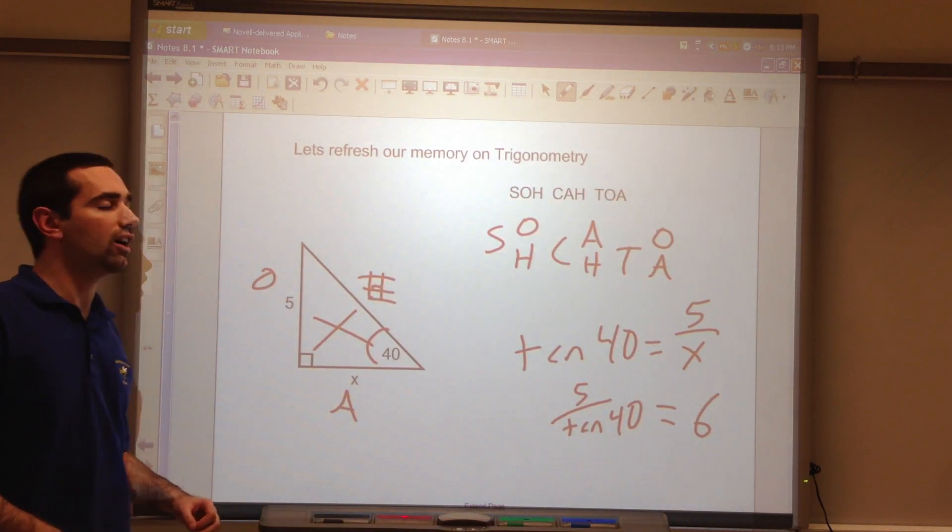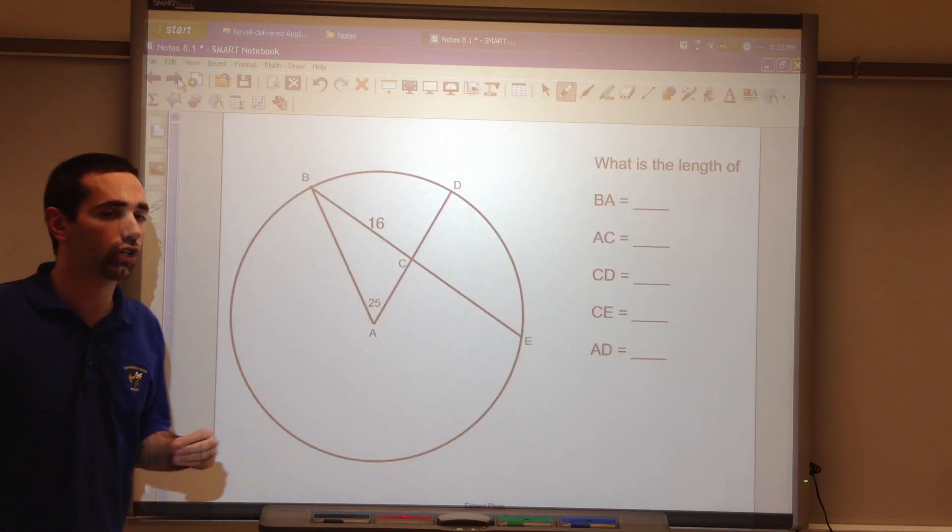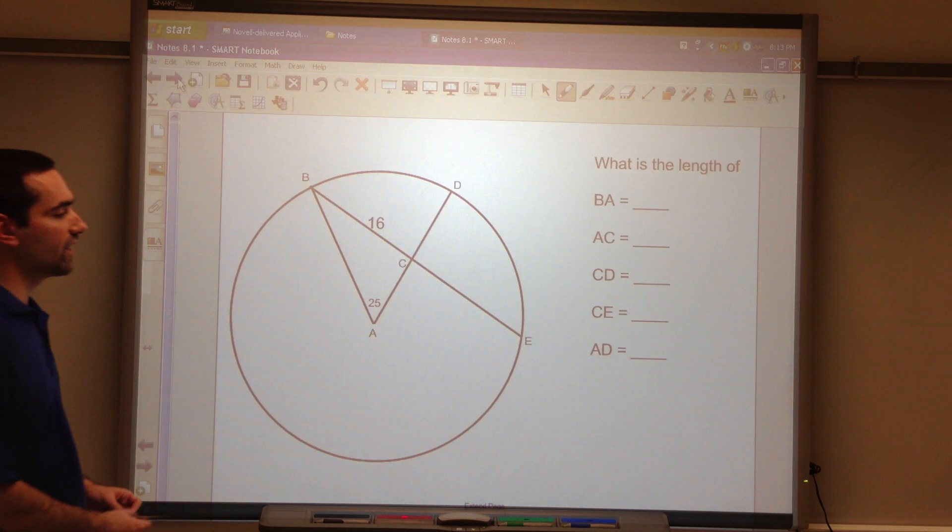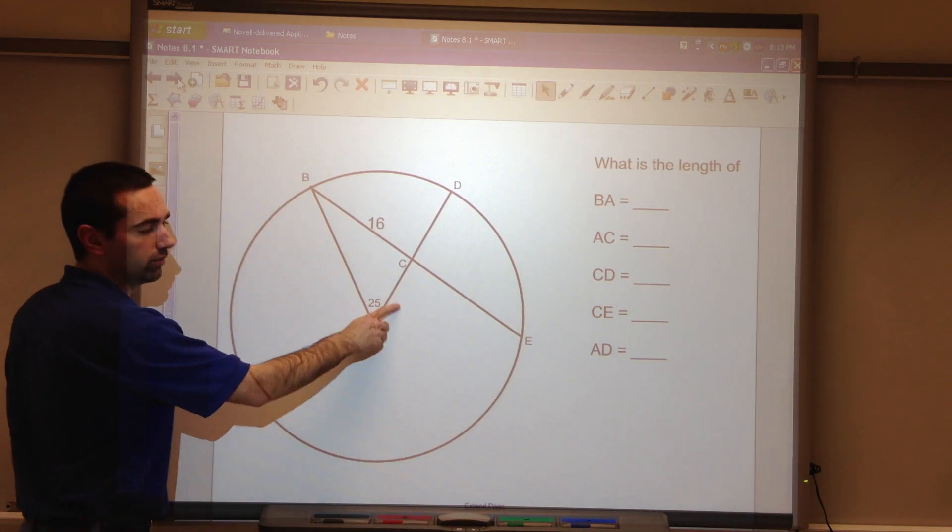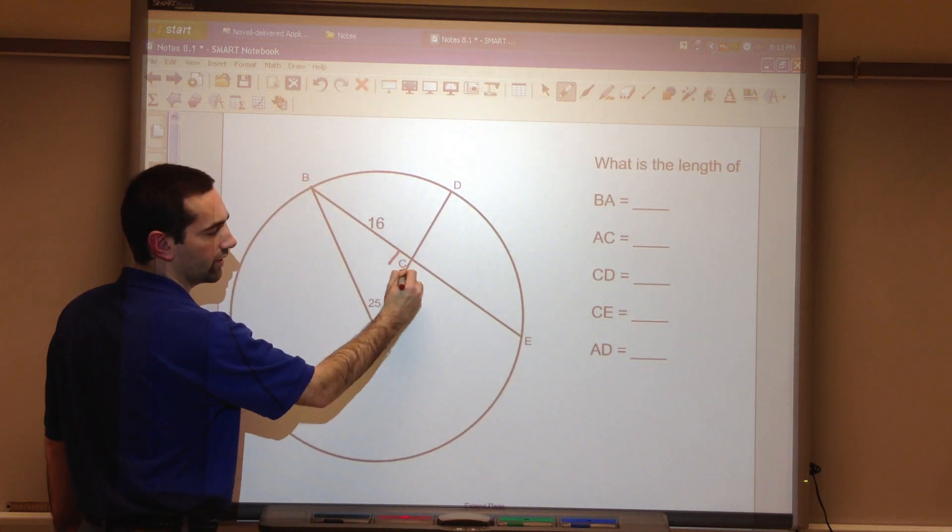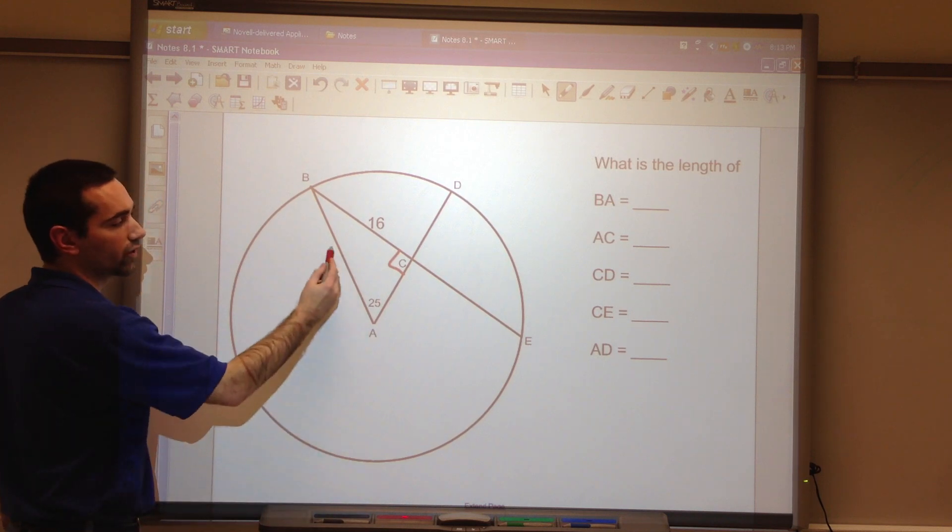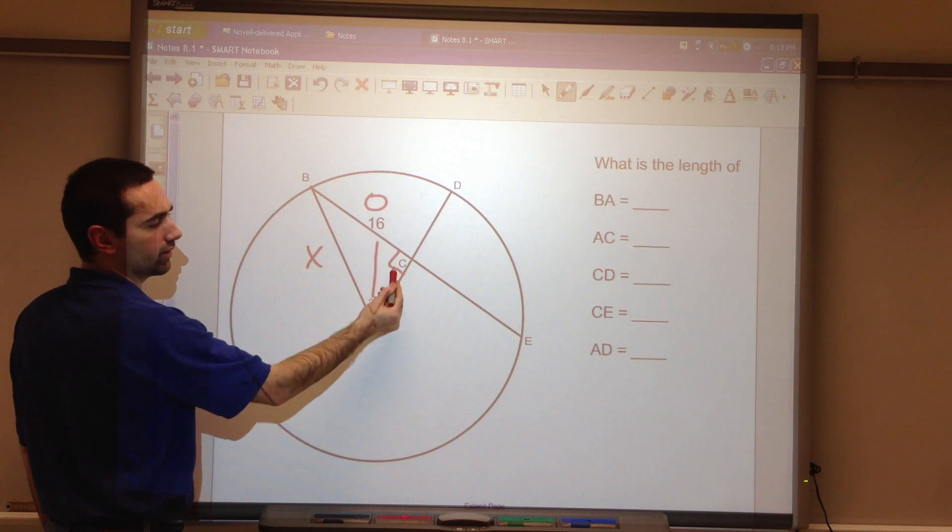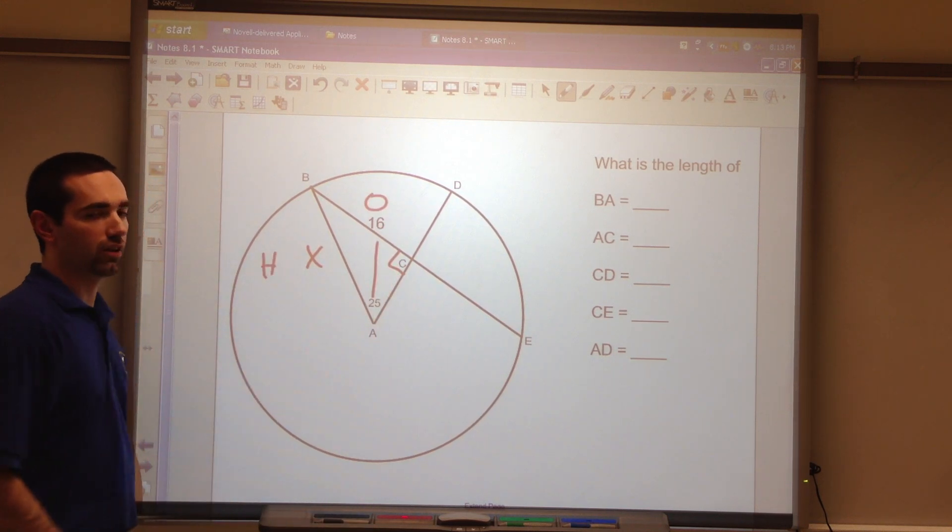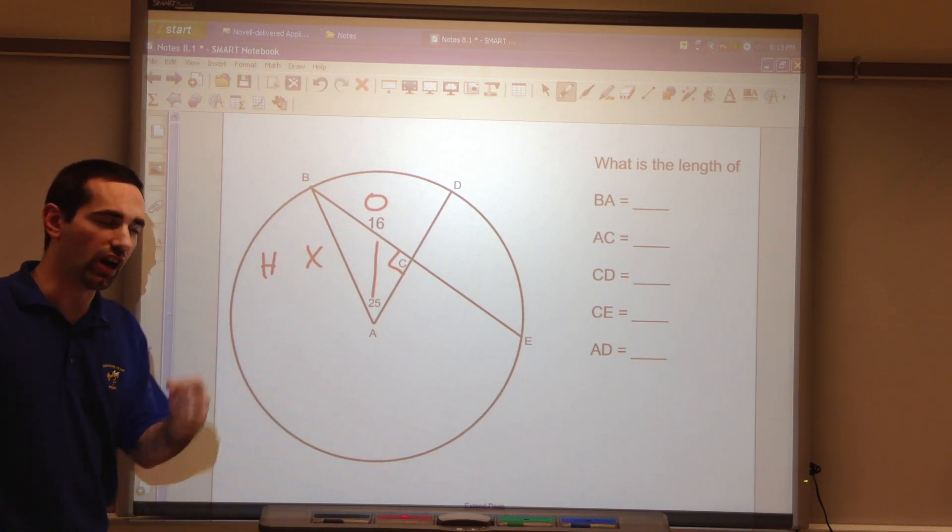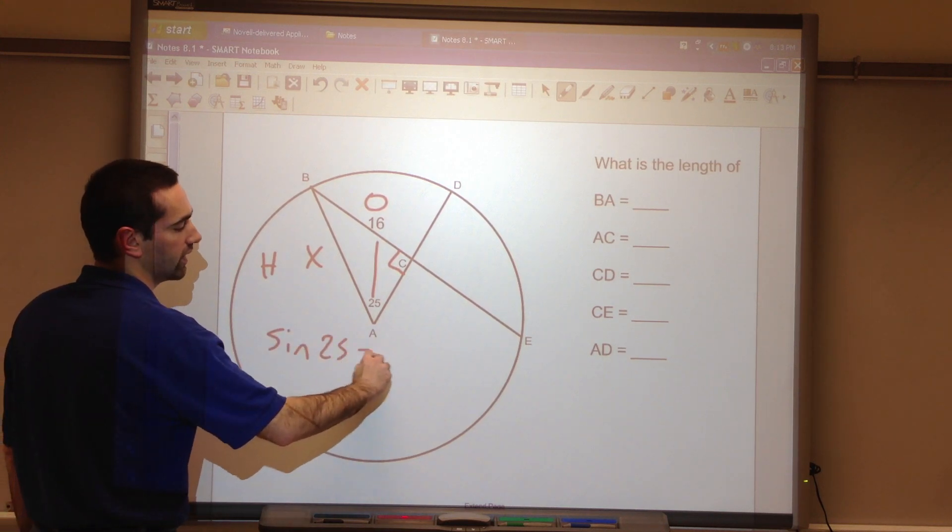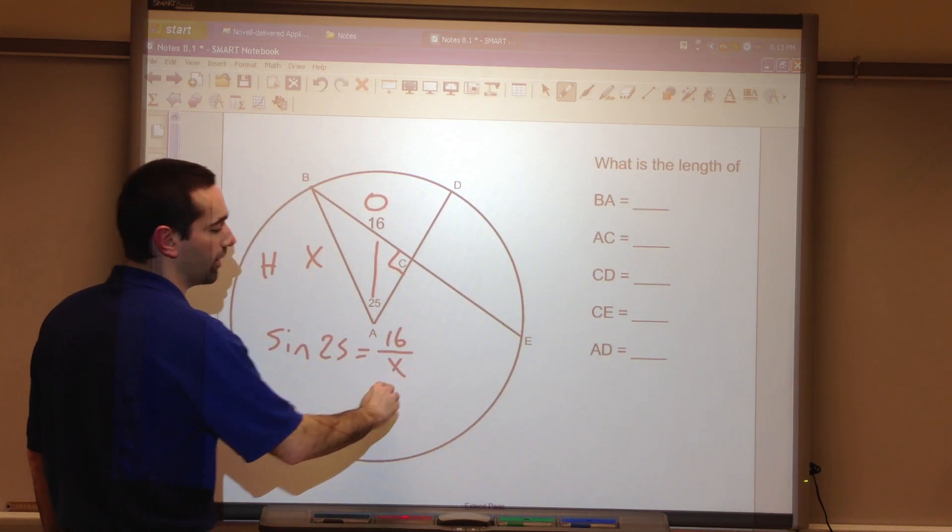So let's look at a problem where we apply trigonometry. Here, we have an angle. 90 degrees. We're going to solve for BA. Opposite, hypotenuse. OH sine. Sine of the angle equals the opposite over the hypotenuse. X.